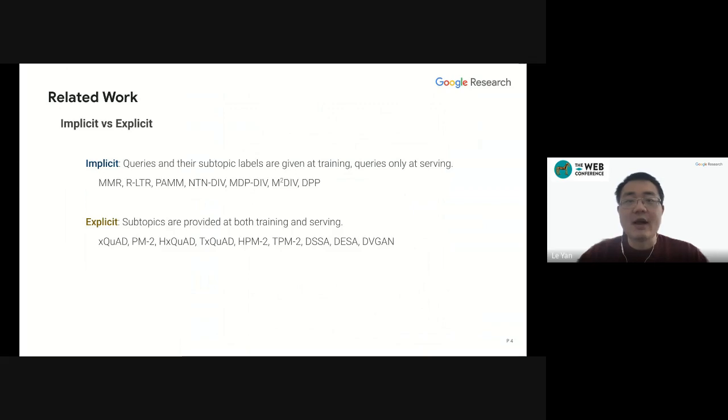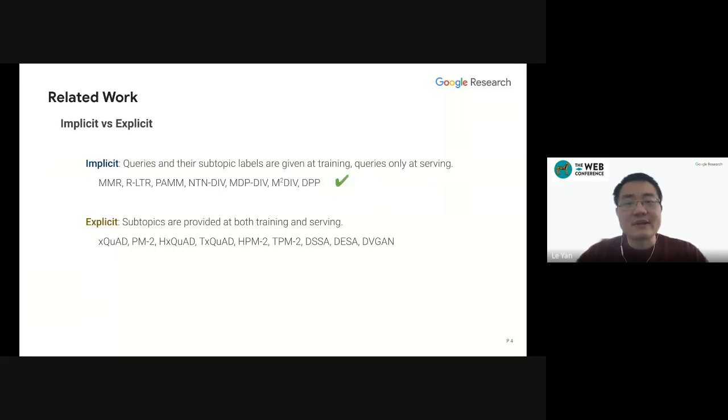The methods that aim to optimize for diversification ranking can be generally categorized into two categories: the implicit versus explicit approaches. In the implicit methods, queries and subtopics are used in training, but only queries are available at serving. In the explicit methods, subtopics of the query are needed in both training and serving. As more information is available, the performance of explicit methods is usually better. However, the subtopics are usually not available in practice, so we will focus on the implicit approach in this research. Here we also give brief lists of methods in both categories.